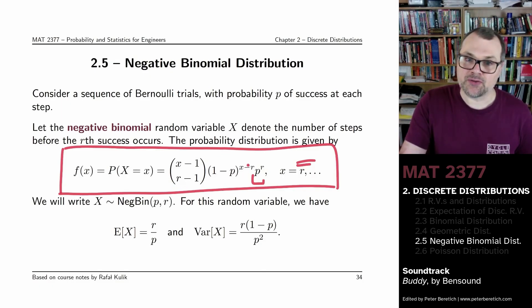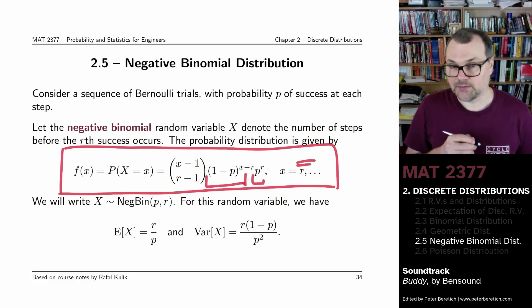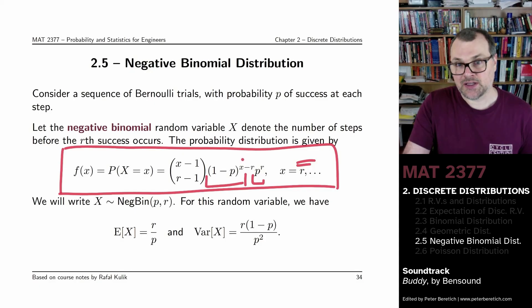The probability of X minus R failures, the other ones, failures. So we have X minus R failures plus R successes, that gives us a total of X trials.